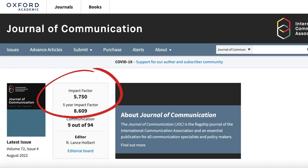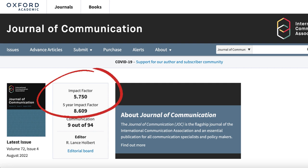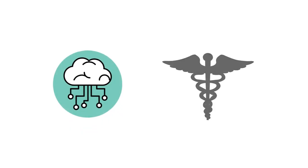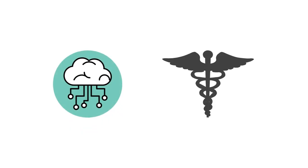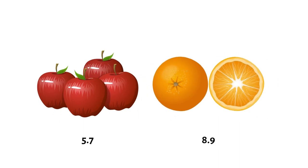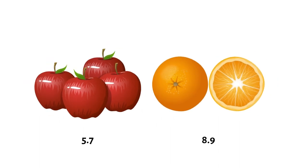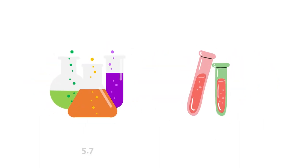Journals often like to share what their impact factor is, but there are some important things to keep in mind. Impact factor is highly field specific. Due to differing publishing and citation practices, the numbers can be quite different in different fields. So comparing between computer science and medicine, for example, isn't a good idea.